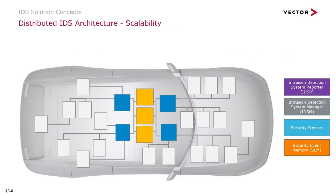How is this concept deployed in a vehicle architecture? Here you see an example vehicle architecture where yellow nodes represent high-power ECUs performing important central processing tasks, blue nodes represent typical domain controllers coordinating domain tasks, and white nodes represent standard ECUs handling specific tasks like engine control or interior lighting. The most basic deployment includes one node with an IDSM, a number of security sensors, and a security event memory — allowing local security events to be reported and pushed to that node's security event memory.